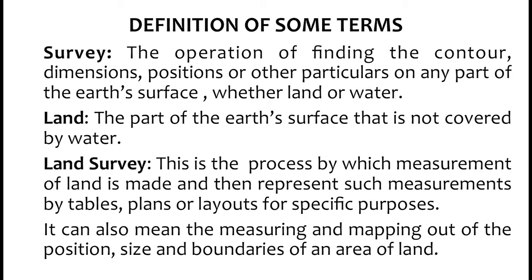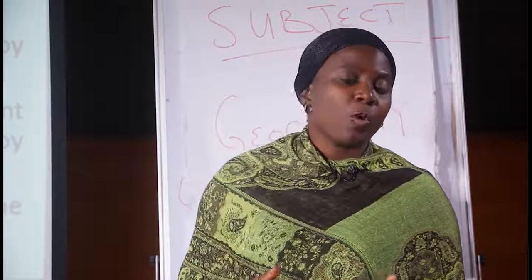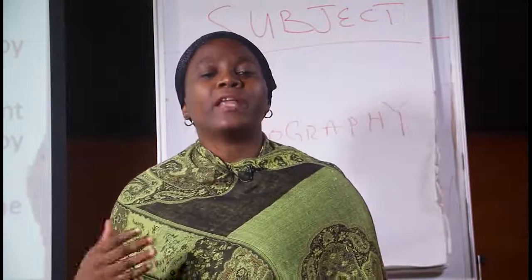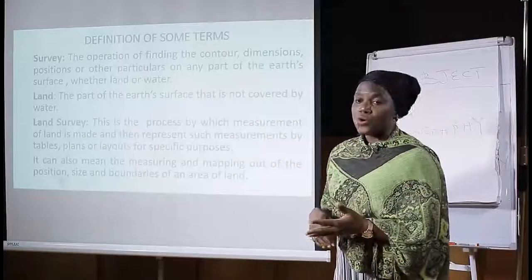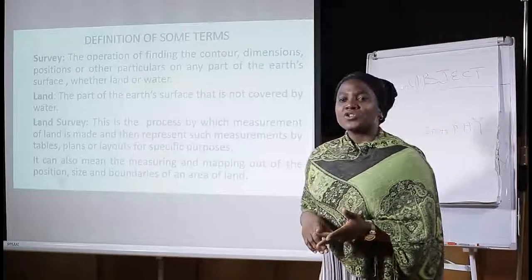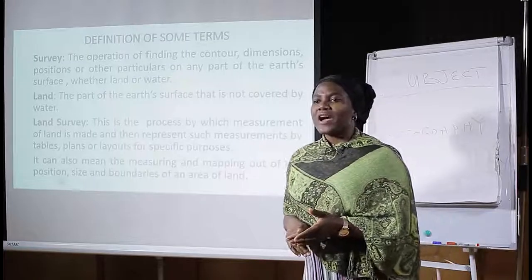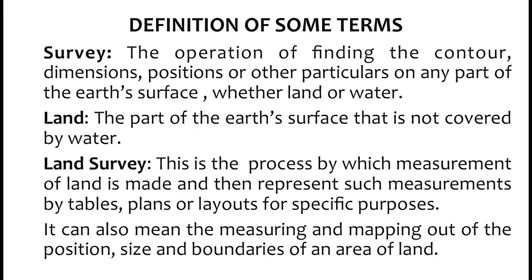Now, we know that these features are there, be them on land or water. But when we talk about finding out, it means that there are specific things that we are looking at, and it has to do with contours, dimensions, and positions. This refers to the fact that there are measurements involved.